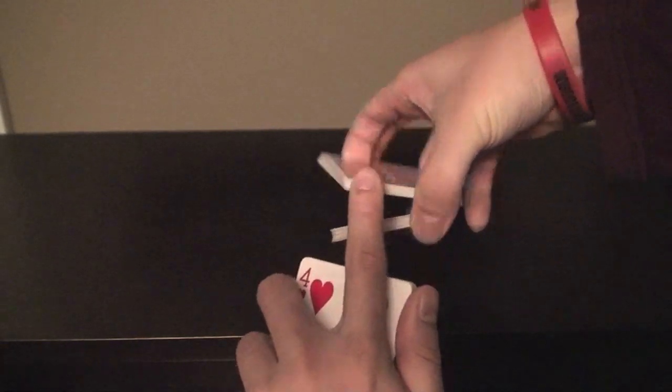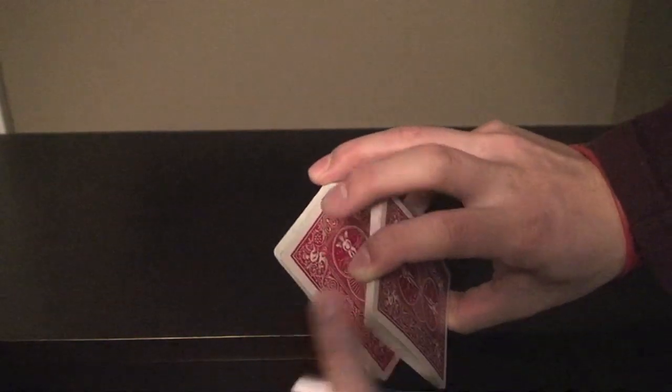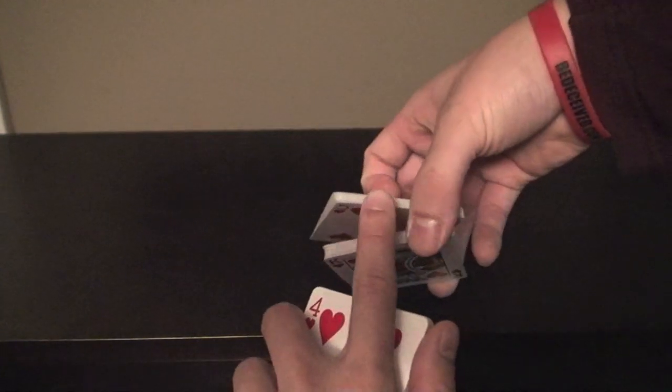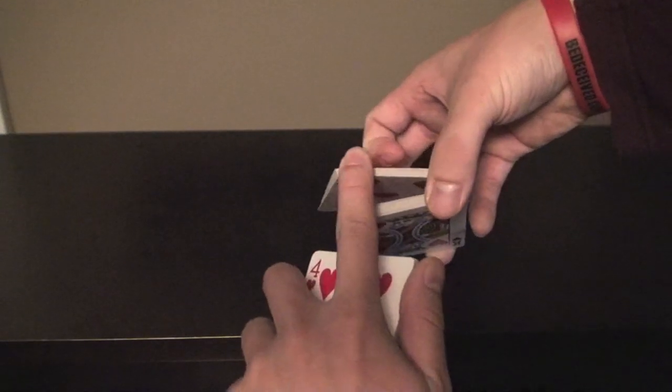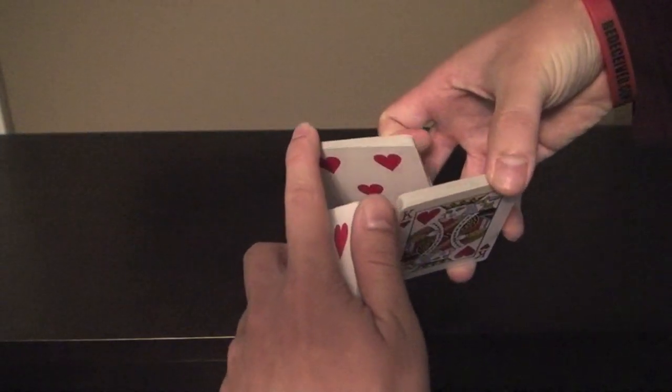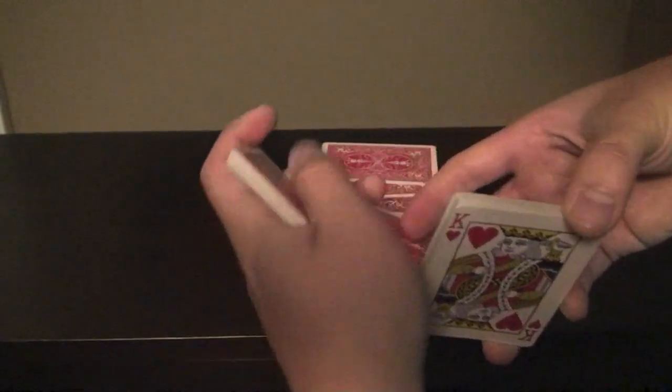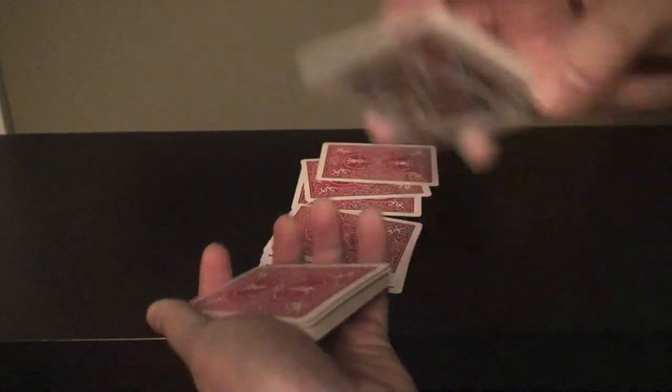Then what you're going to do is what I like to do now is transfer this index finger to the middle finger like that and then I'm going to swivel the packet, I'm going to contact the corner and then start twisting, twisting, twisting and then it falls just like that and then put the rest on top.